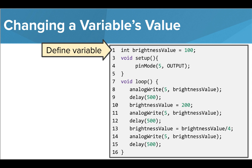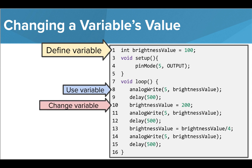At the beginning of this code, we created a variable called brightness value and set its value to 100. So when we use the variable on line 8 to set the brightness of the LED, it will have a brightness of 100. Note that we do not use the word int after creating the variable. After we've lit the LED, we are changing the value of the brightness value variable to 200 on line 10. So when we use this variable to change the brightness of the LED on line 11, it will now have a brightness of 200.